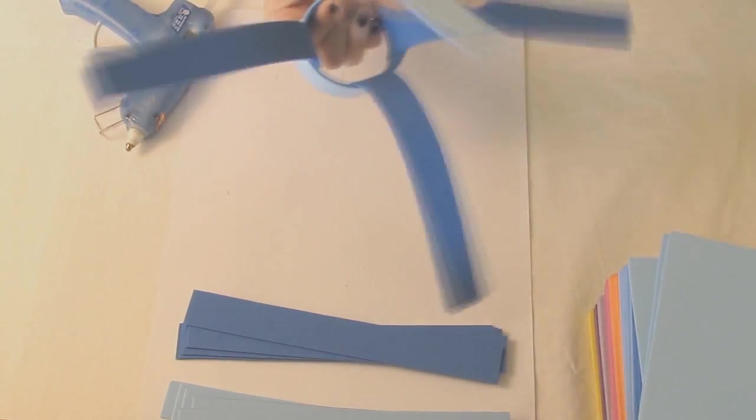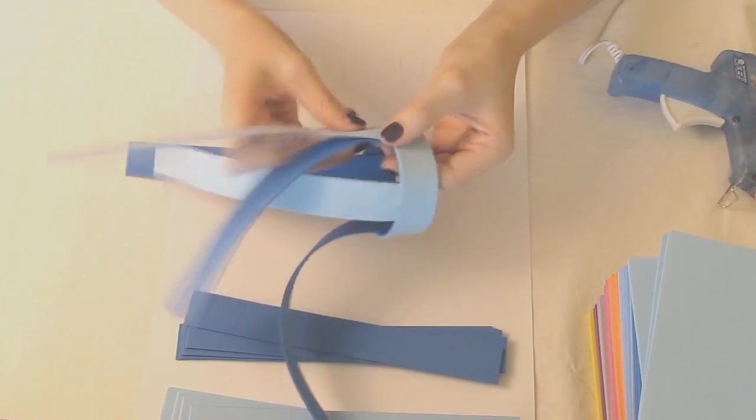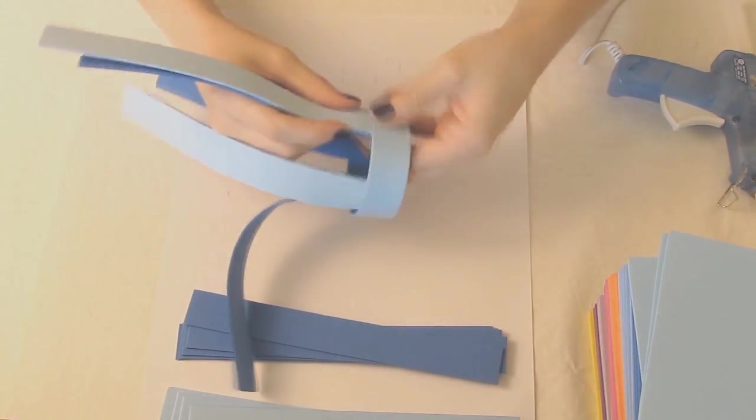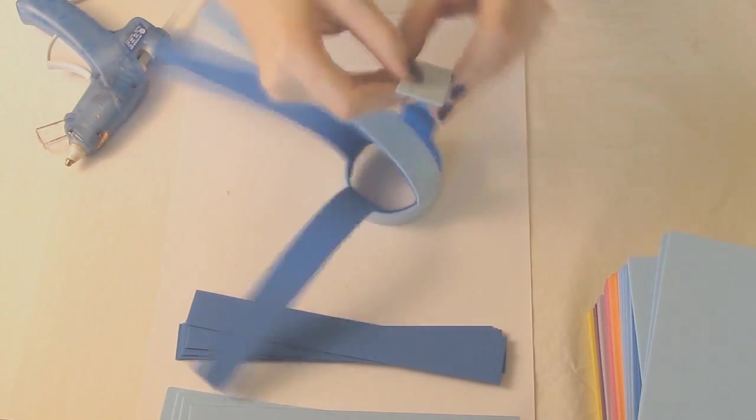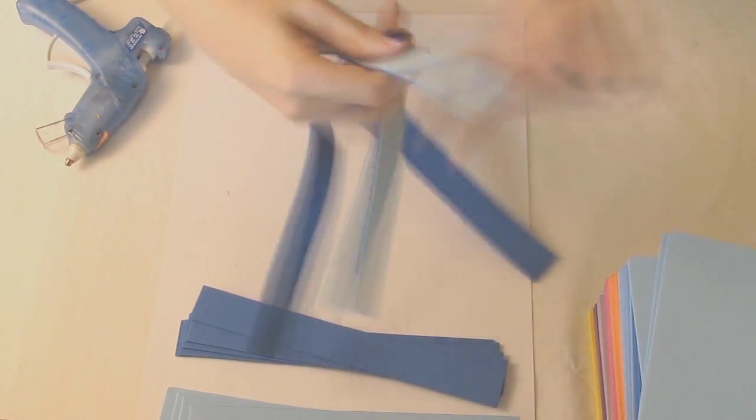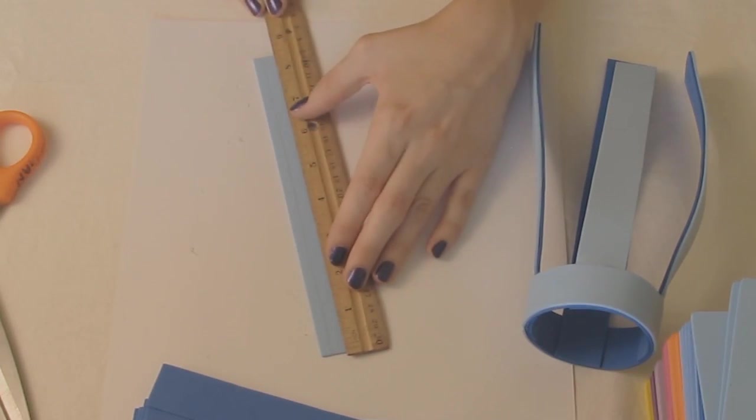After that just hot glue all the pieces together making sure there are no air pockets. I quickly cut off the excess on the top of the strips and then moved on to creating pieces that you can use for detailing.